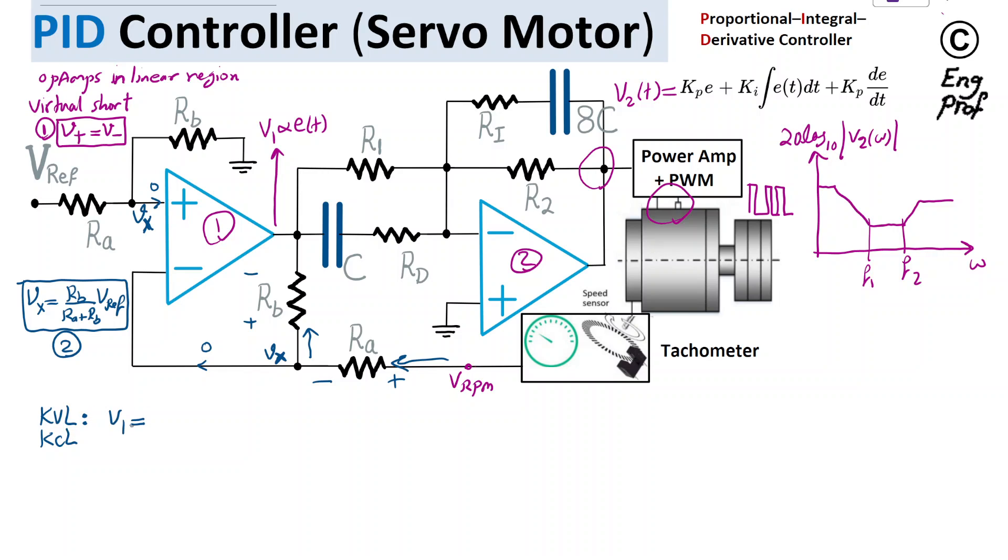V1 at the output of op-amp one is equal to Vx minus the voltage drop across Rb, which is minus Rb times the current going through Rb, which is VRPM minus Vx divided by Ra. If we just shuffle things around, we get Ra plus Rb divided by Ra times Vx, minus Rb over Ra times VRPM.